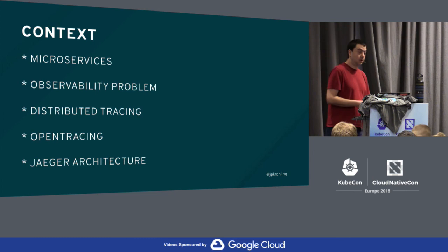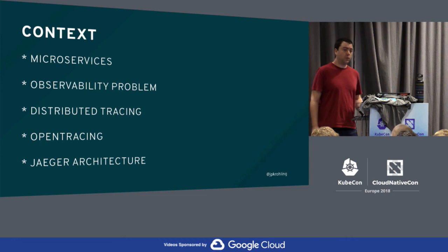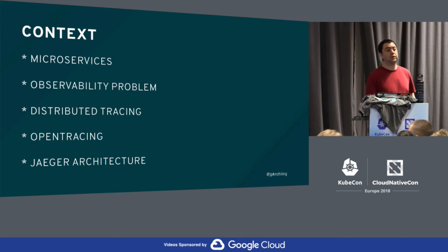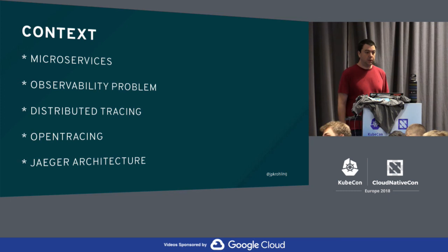The other two pillars being metrics and logging. We talked yesterday about what distributed tracing is, why it's needed, why it's relevant for microservices. We talked about why OpenTracing — what are the advantages, what is the context, why was it formed. And we left off with a slide on the Jaeger architecture.